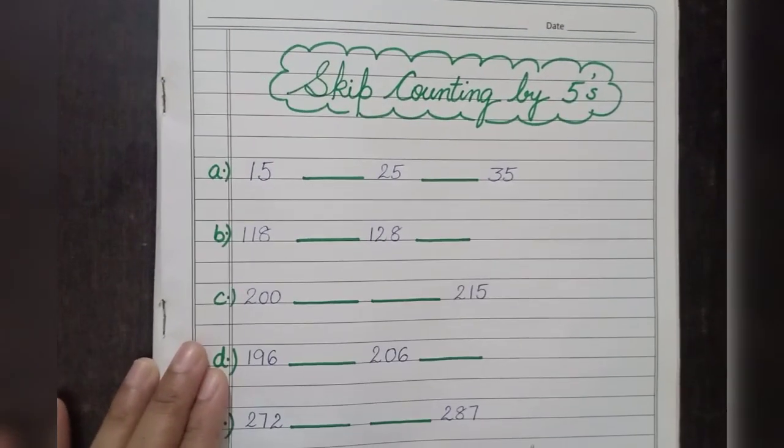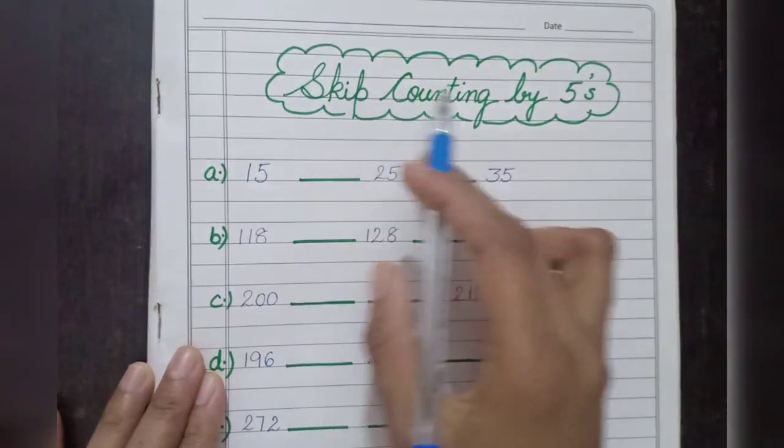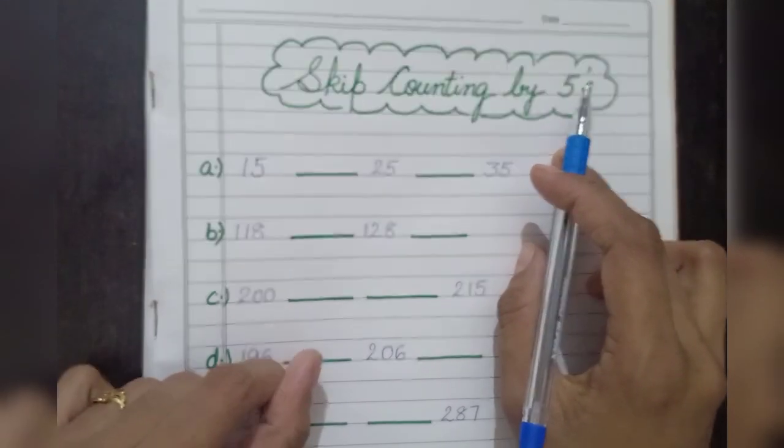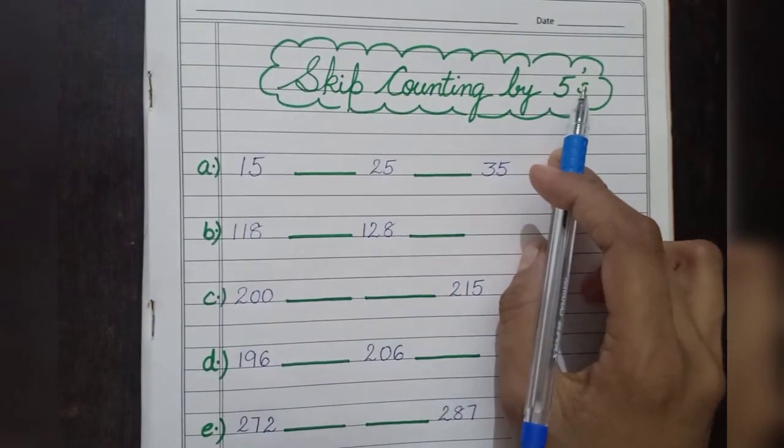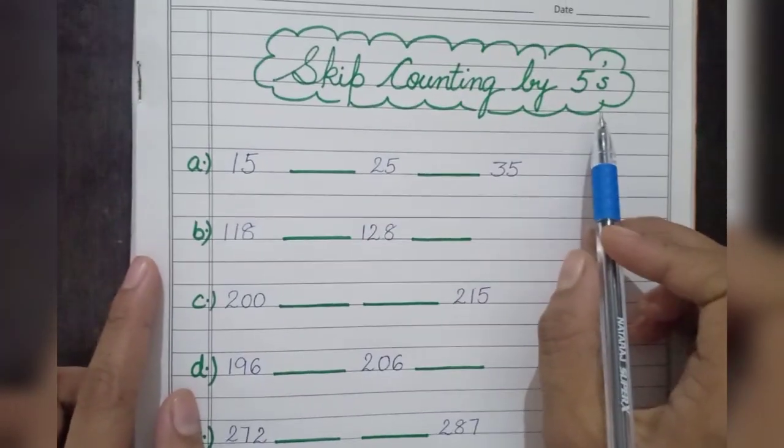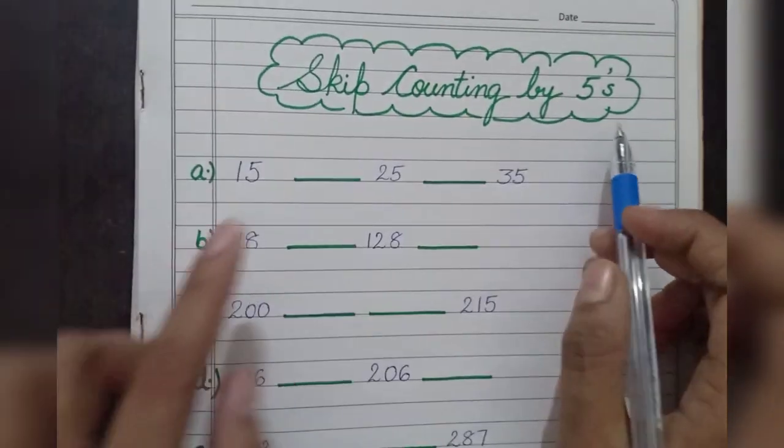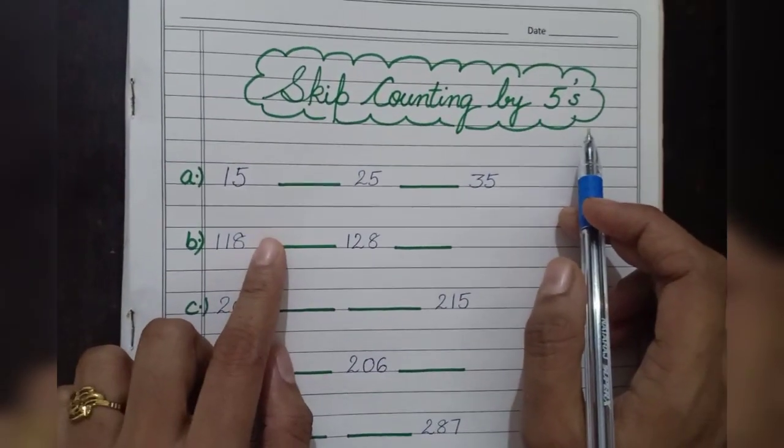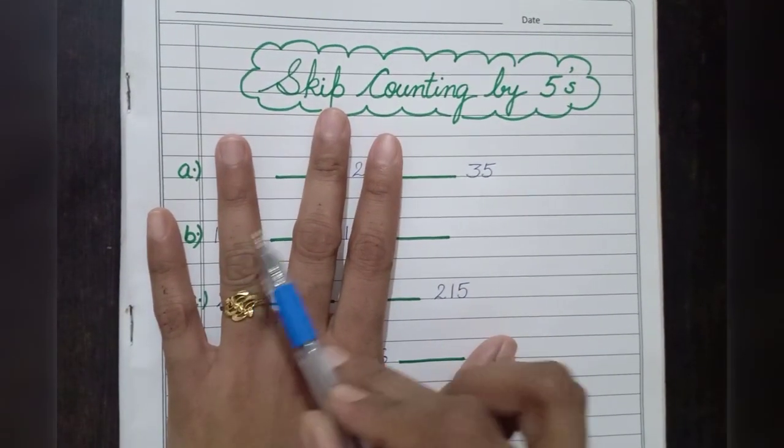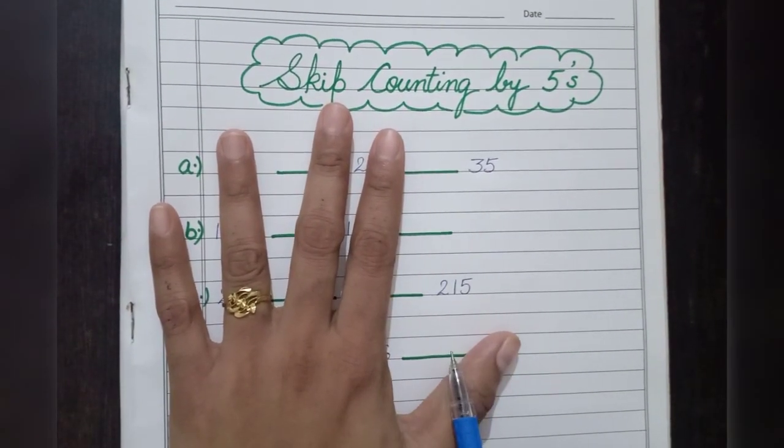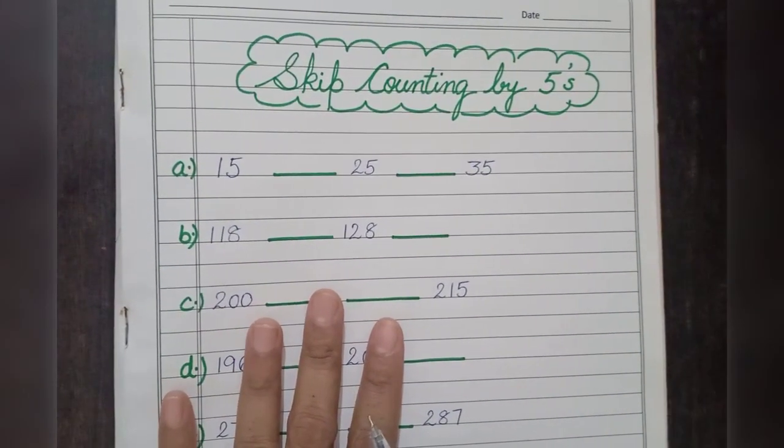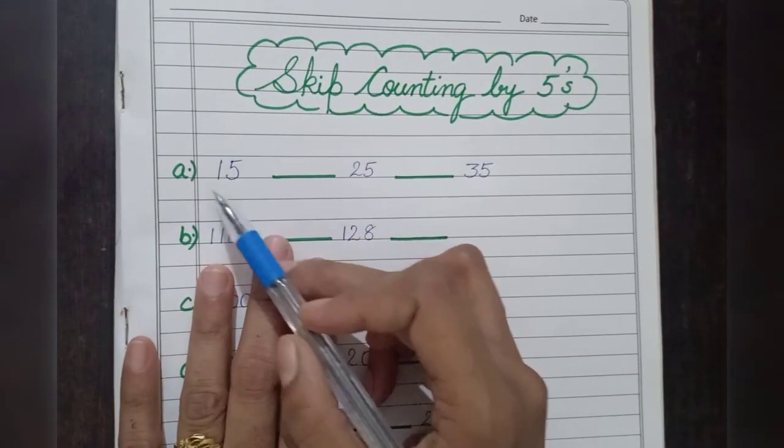Hello children, today we are going to do skip counting by fives. In my previous video I told you how to do skip counting by twos, so today we are going to do skip counting by fives. What we are going to do is we will take out five fingers - one, two, three, four, five - and now we are going to do the counting. Let us see the number which we have got over here is number 15.